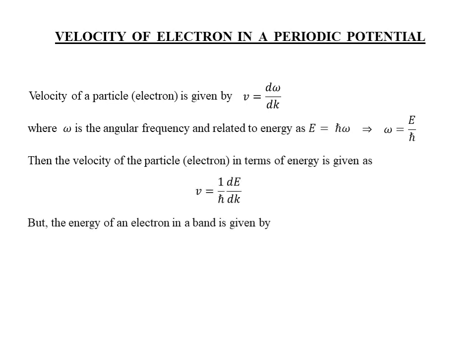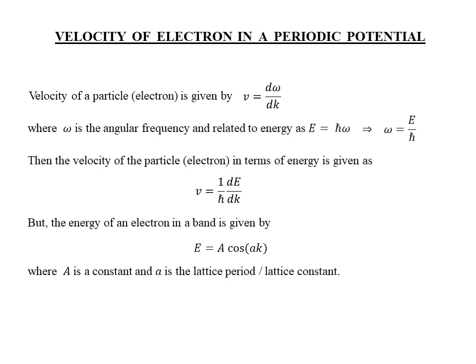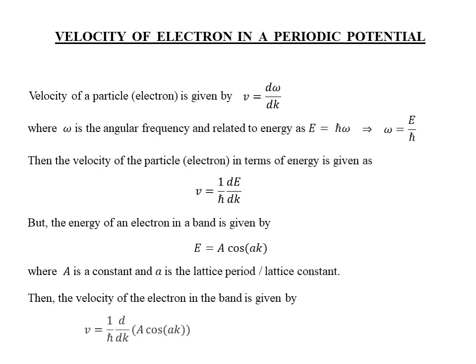The energy of an electron in a band can be represented by a cosine function of this form, where capital A is a constant, small a is the lattice period or lattice constant, and k is the wave vector. With the energy of the electron in a band given by this cosine function, the expression for its velocity in the band can be determined by replacing E in the velocity expression with the cosine function. By plugging the cosine function for the energy and carrying out the differentiation with respect to k, we get the velocity of the electron in a band as a function of the wave vector as shown here.